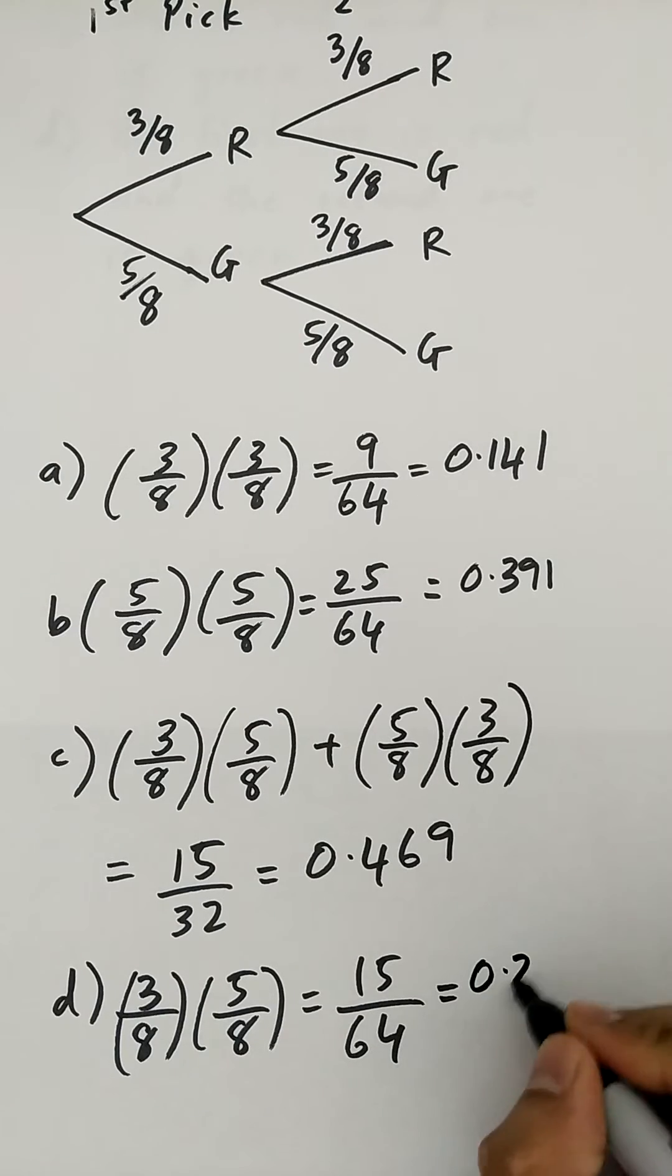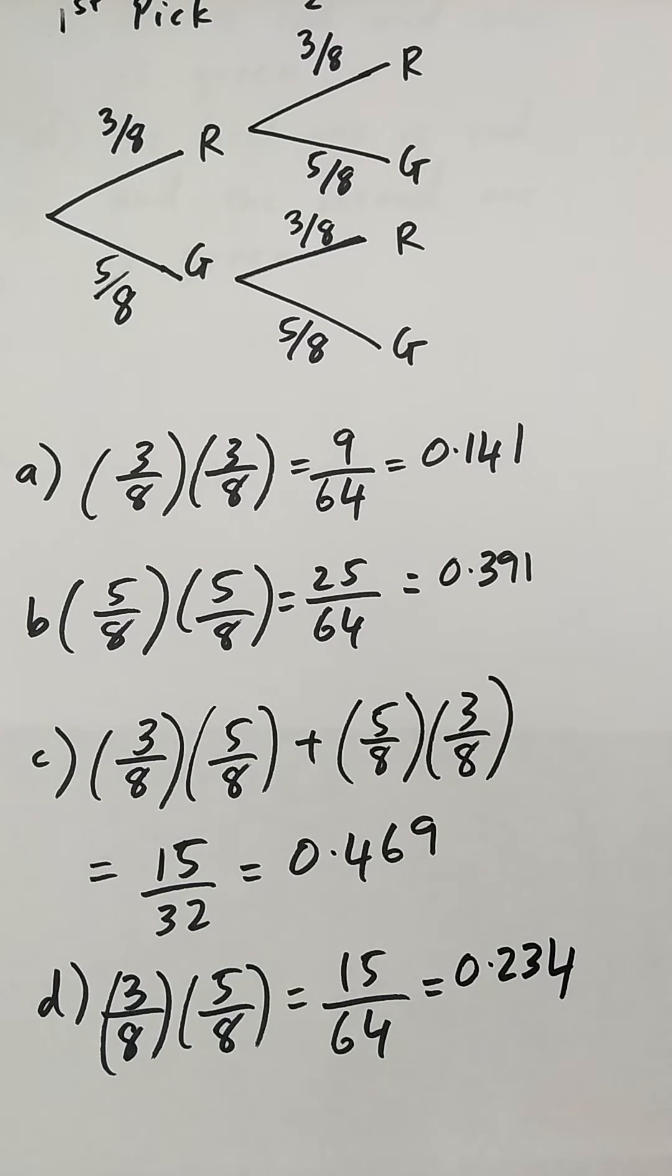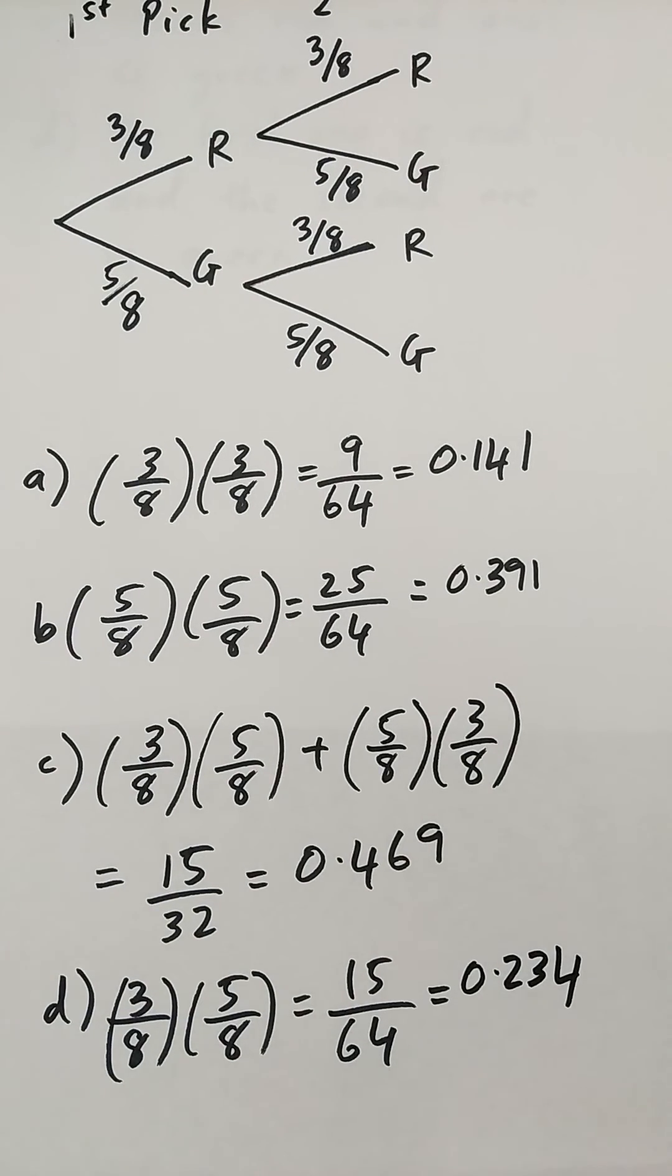So the only thing that changes in this example from the previous one is the tree diagram and the actual probabilities of the individual parts.